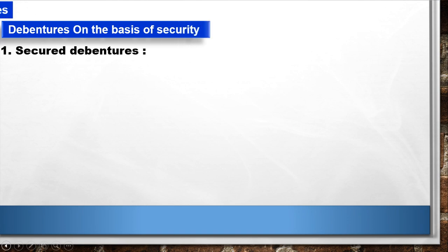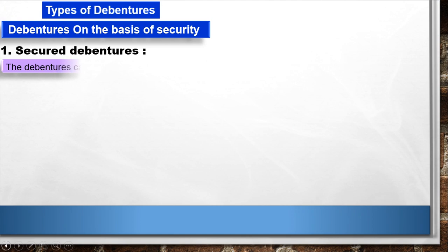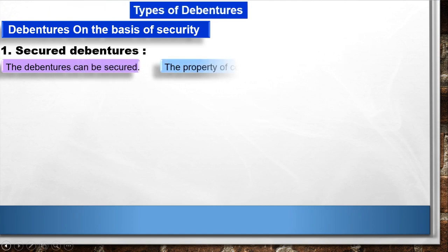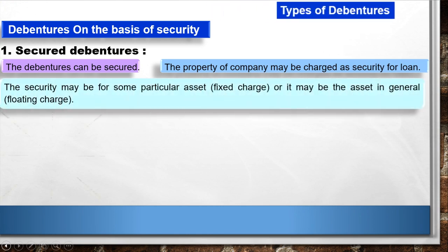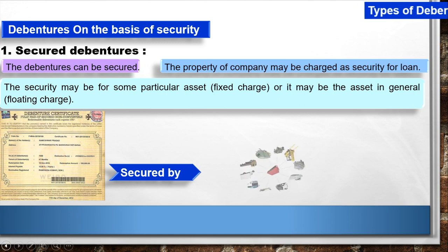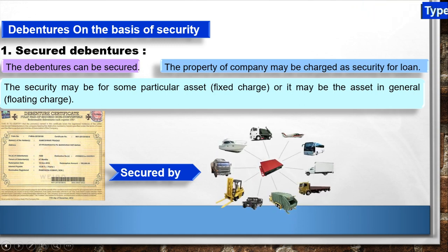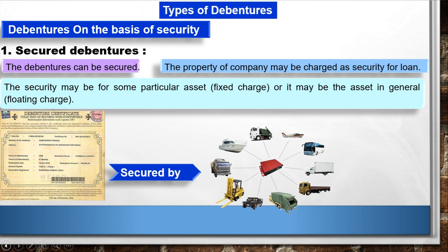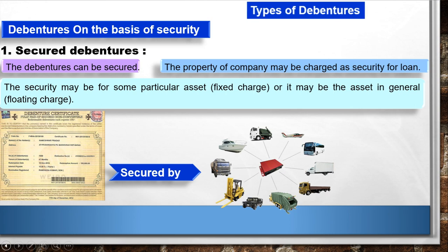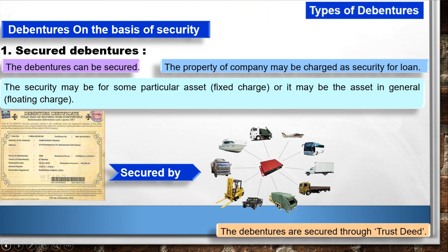Types of Debentures on the basis of security. 1. Secured Debentures: The property of the company may be charged as security for the loan. The security may be for some particular asset (fixed charge) or it may be the assets in general (floating charge). Debentures are secured through a trust deed.